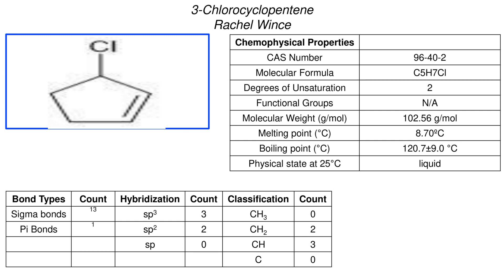Looking at the molecule, we have a total of 13 sigma bonds and only one pi bond, as you can see from that double bond right there. There are only two carbons with sp3 hybridization and two carbons with sp2 hybridization, which leaves us a total of two CH2 groups and three CH groups.